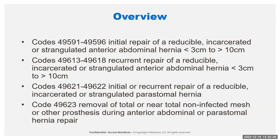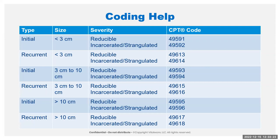Codes 49621 through 49622 are for the peristomal hernia — for that one, they don't care if it's initial or recurrent, just whether it's reducible or incarcerated/strangulated. The 49623 is an add-on code for removal of total or near total non-infected mesh or other prosthesis during the repair. The size is going to be important, as well as the clinical presentation, but it's not going to matter if it is open, laparoscopic, or robotic. CPT has a table in the book to kind of help — you have your initial by size, whether it's reducible, and then incarcerated or strangulated, showing the different codes that might be used.